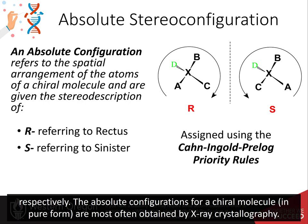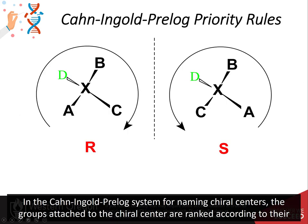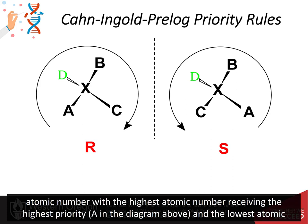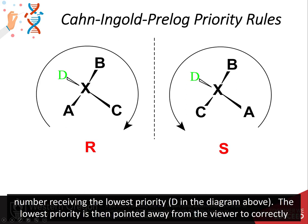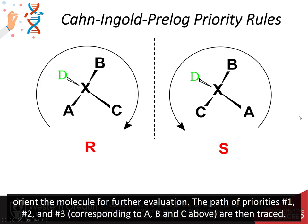The absolute configurations for a chiral molecule in pure form are most often obtained by X-ray crystallography. In the Cahn, Ingold, and Prelog system for naming chiral centers, the groups attached to the chiral center are ranked according to their atomic number, with the highest atomic number receiving the highest priority — this is A in the diagram above — and the lowest atomic number receiving the lowest priority, D in the diagram above, placed away from the viewer to correctly orient the molecule for further evaluation.